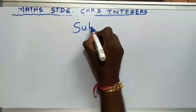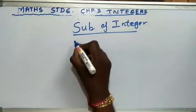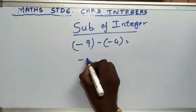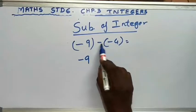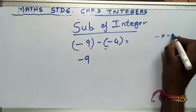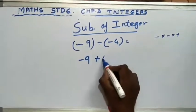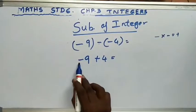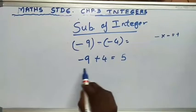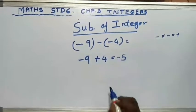Our next topic is subtraction of integers. Let me give you a number: minus 9 minus (minus 4). I will write minus 9. But here minus and minus are both there. The bracket means multiply, so minus into minus is plus. So you write plus 4. Now our formula: left side negative, right side positive — minus into plus is minus. So 9 minus 4 is 5. Which number is greater? 9. And 9 has a minus sign, so the answer is minus 5.